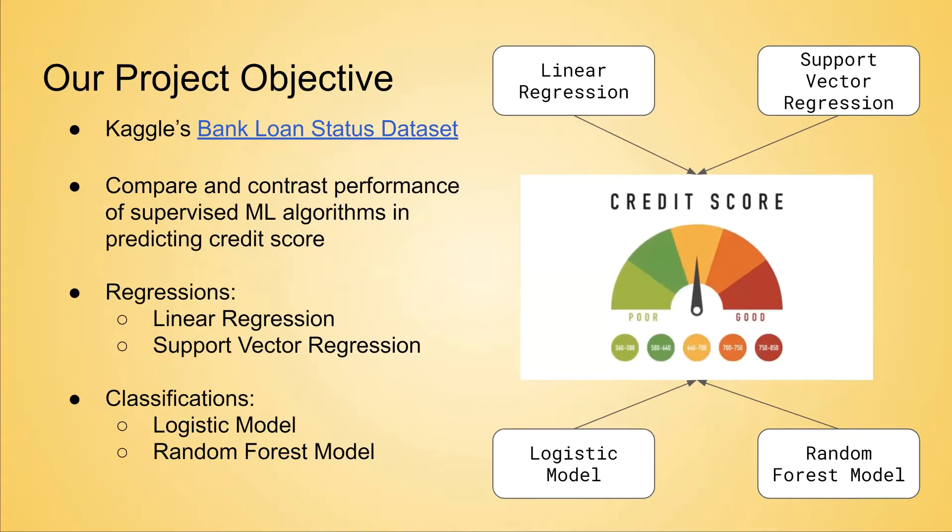We decided to work off of Kaggle's bank loan status dataset. From this data, we trained two regression models and two classification models to see how they comparatively performed in predicting a customer's credit score or credit score range.